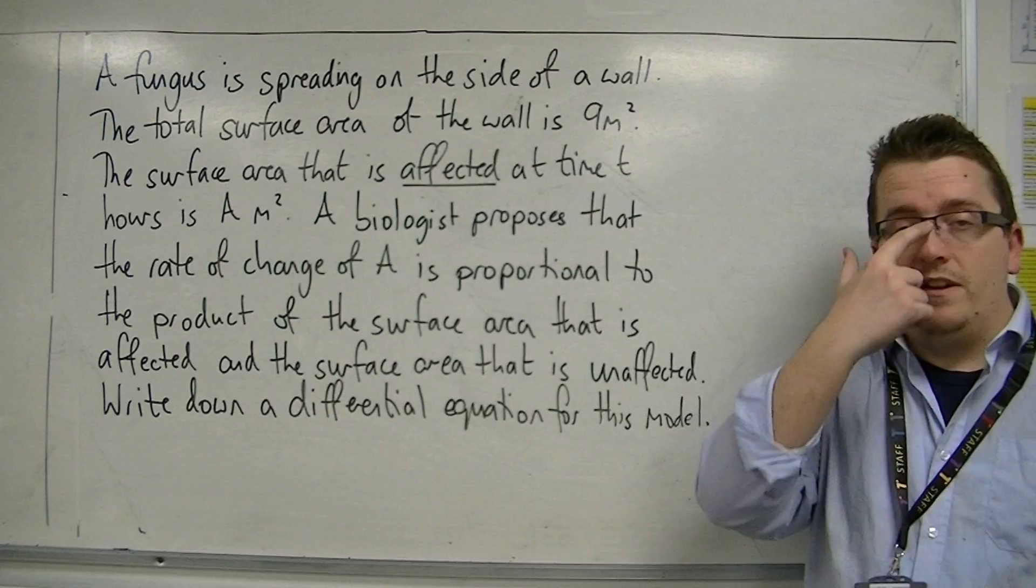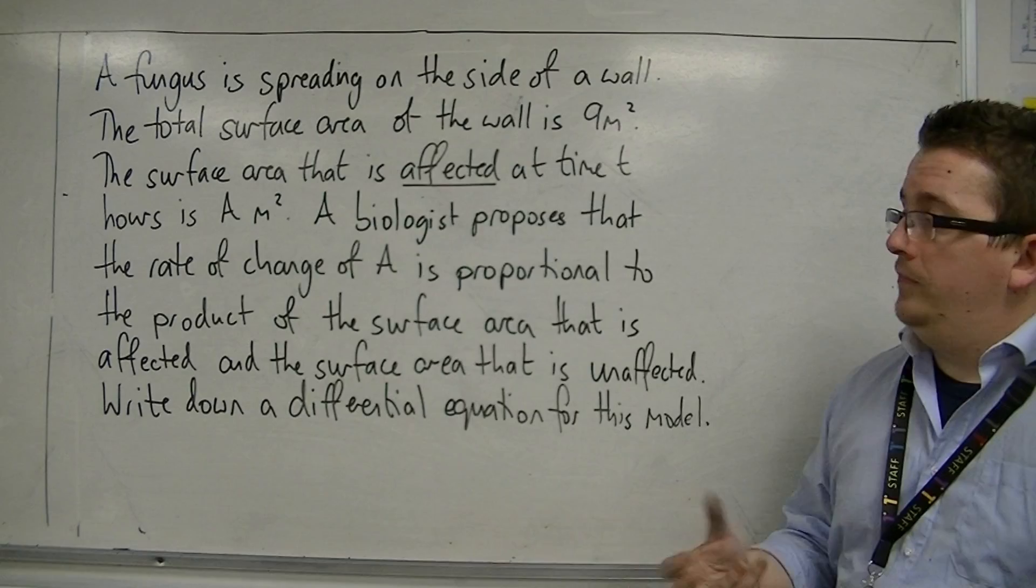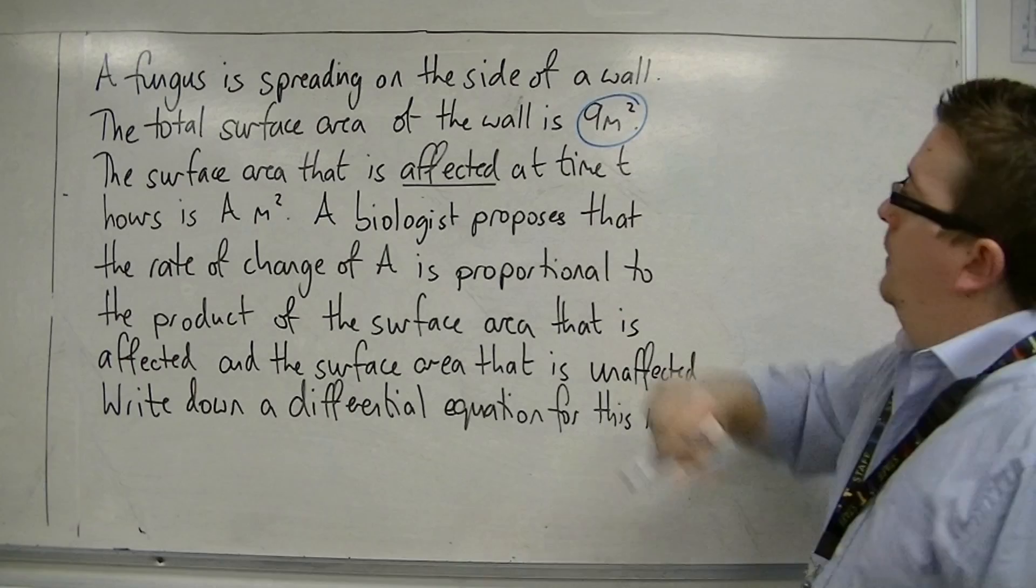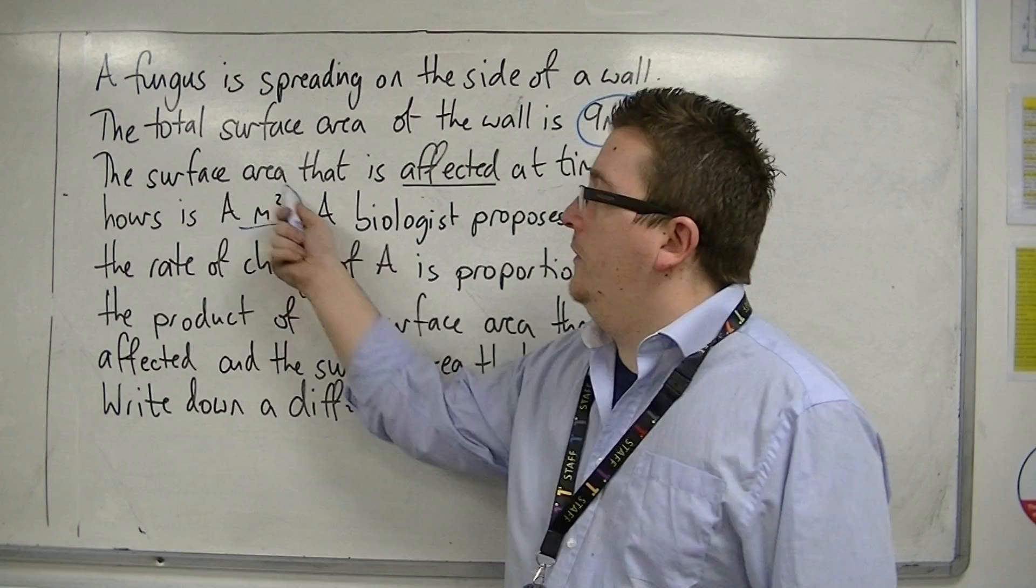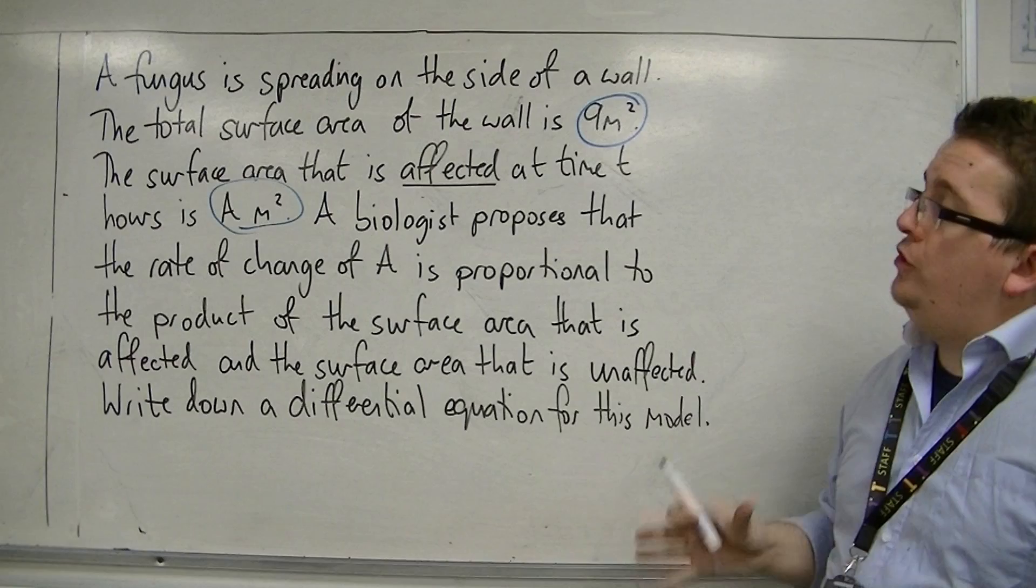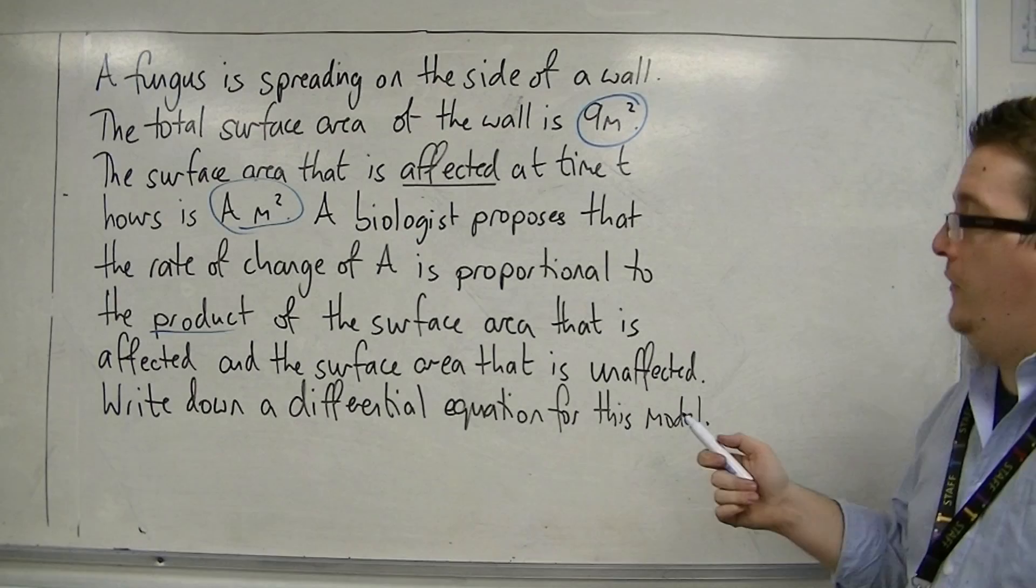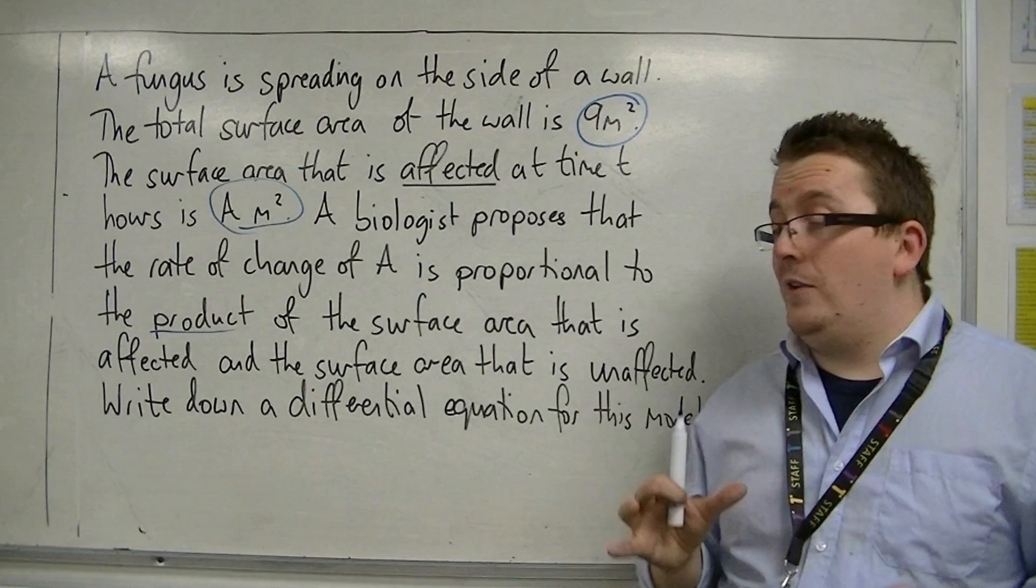So, a fungus is spreading on the side of a wall. The total surface area of the wall is 9 metres squared. The surface area that is affected at time t hours is A metres squared. A biologist proposes that the rate of change of A is proportional to the product of the surface area that is affected and the surface area that is unaffected. Write down a differential equation for this model.